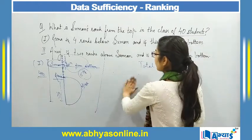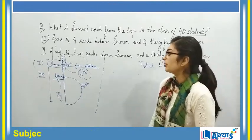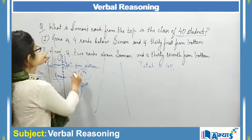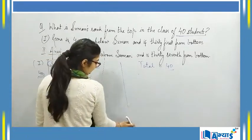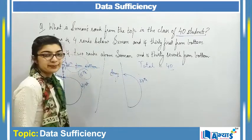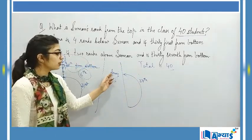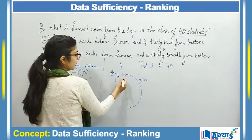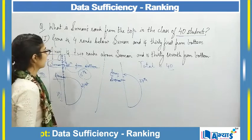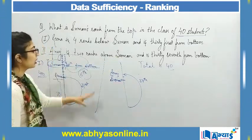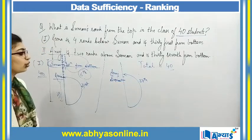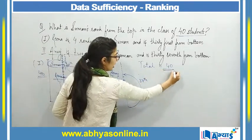Now Statement 2 says: Anuj is 2 ranks above Suman and is 37th from the bottom. Just as before with Reena being 31st from the bottom, here we place Anuj at the 37th position from the bottom. Total strength is 40, so 38th, 39th, and 40th are above Anuj. Anuj is 2 ranks above Suman, meaning Suman is 2 ranks below Anuj. So from Anuj's position at 37th, Suman falls at 35th from the bottom.